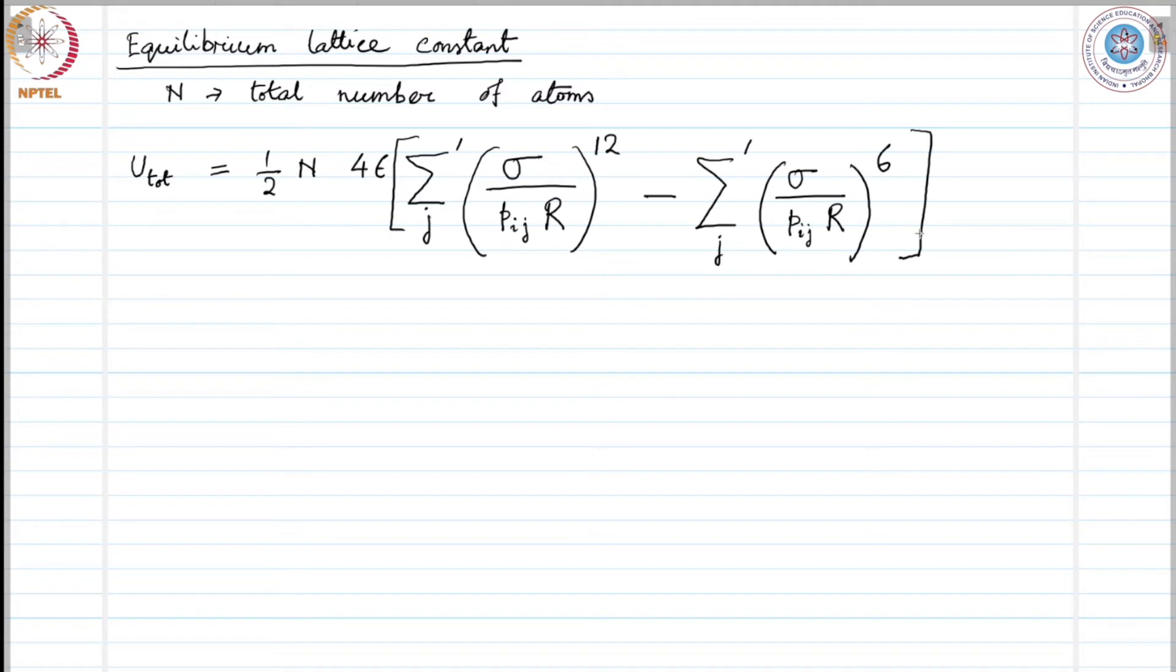What do we mean by sum prime? Sum prime means that i not equals j. J is running over all its possible values, but it cannot include i. I is excluded. But why are we talking about that? Are we summing over i at all? Yes, we are doing that.